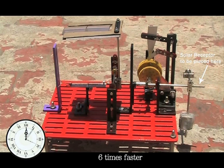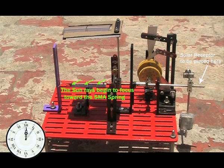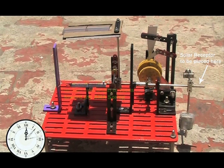When the sun moves away from the solar receptor and approaches the maximum value of the angular deviation, the rays begin to get focused towards the SMA spring by the lenses.